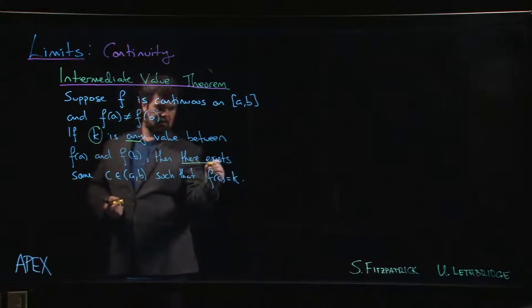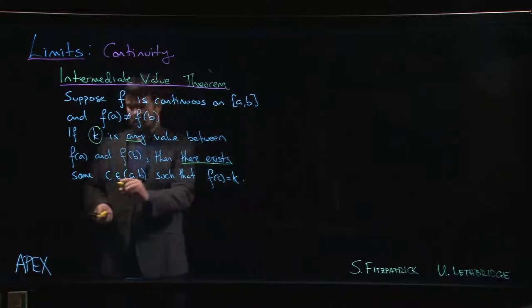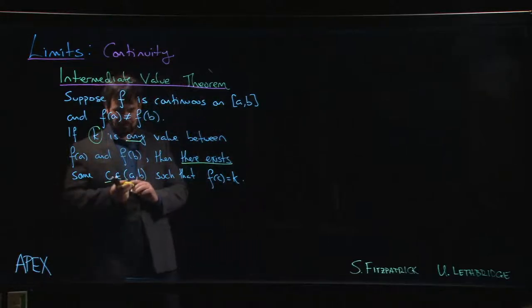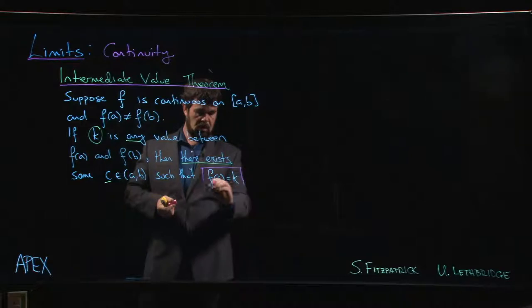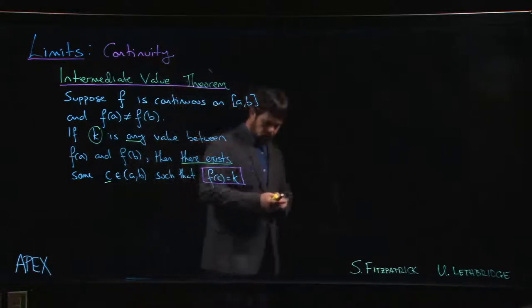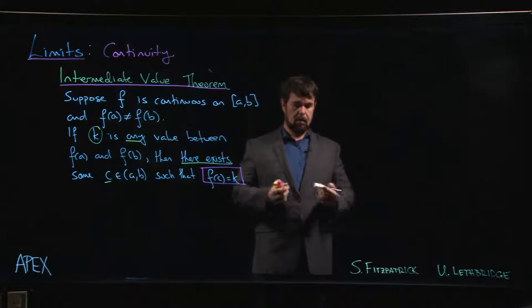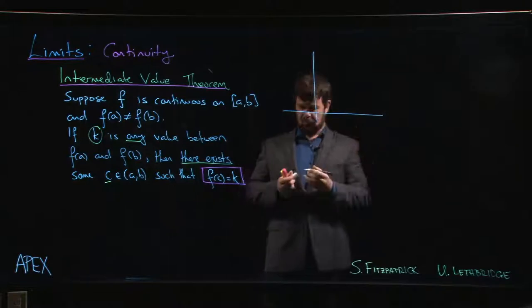You see this "there exists," so it guarantees the existence of this number C. It doesn't tell you what that number C is, it doesn't tell you how to find it, it just tells you that this number exists which satisfies this equation. So let's think about what it's telling us. Well, we think graphically, things become pretty clear.